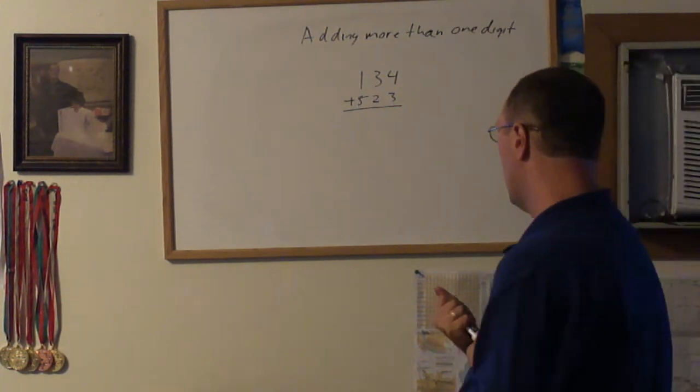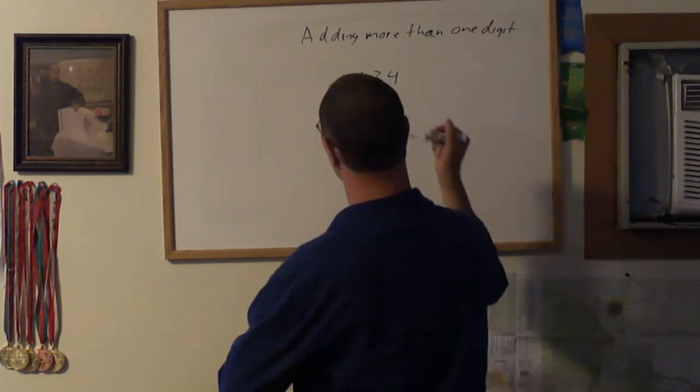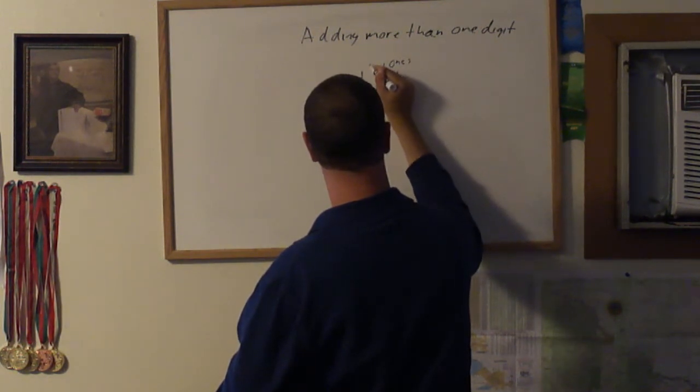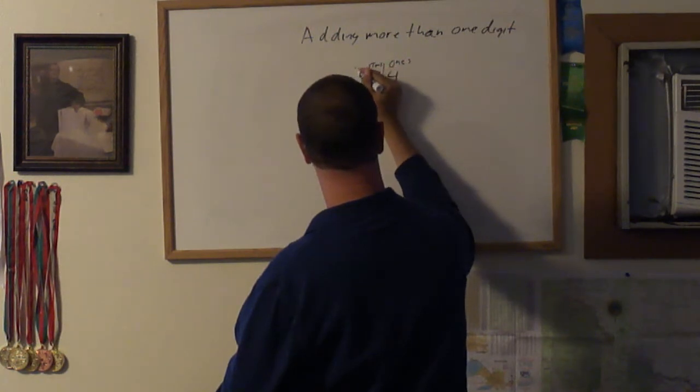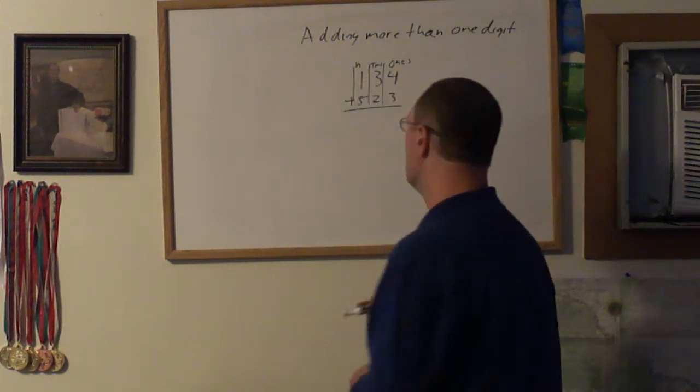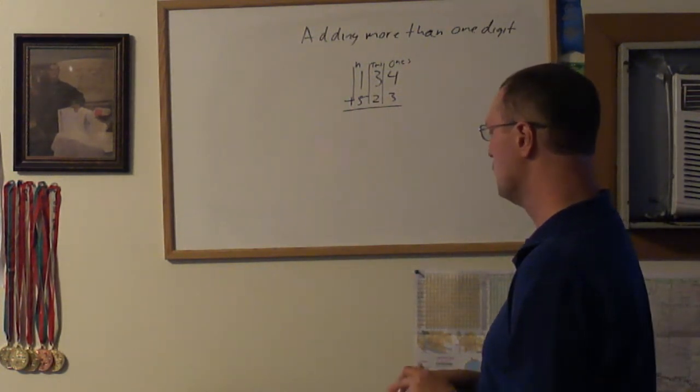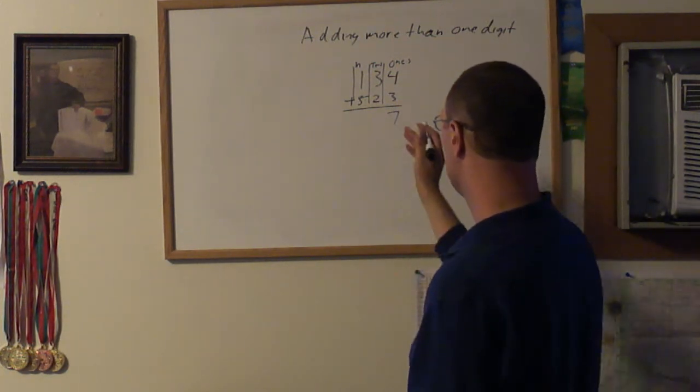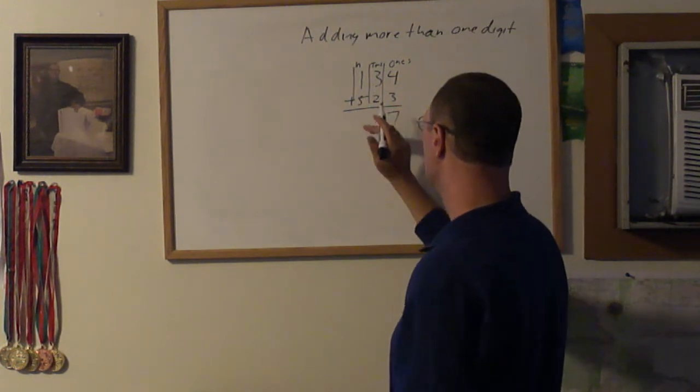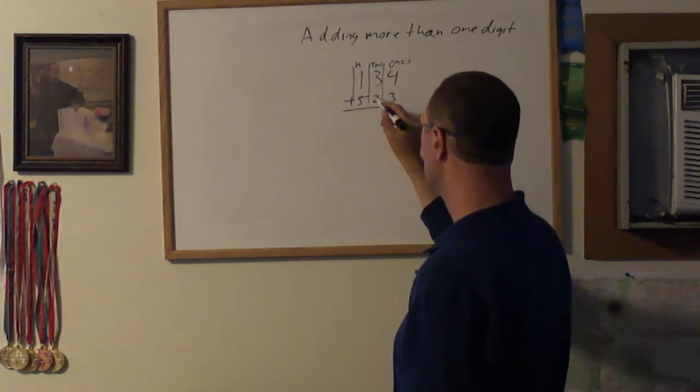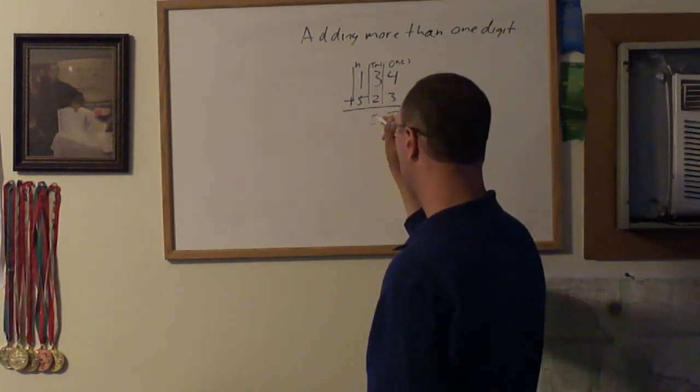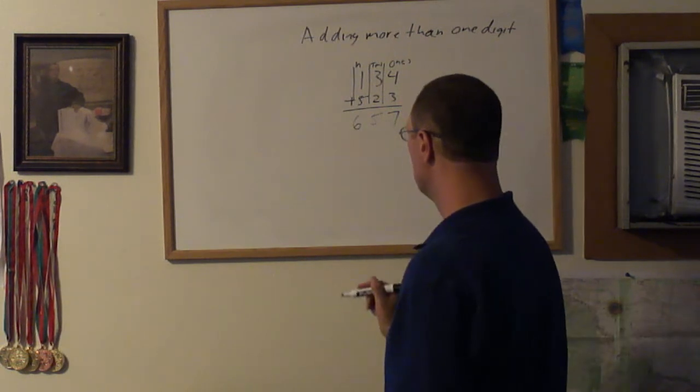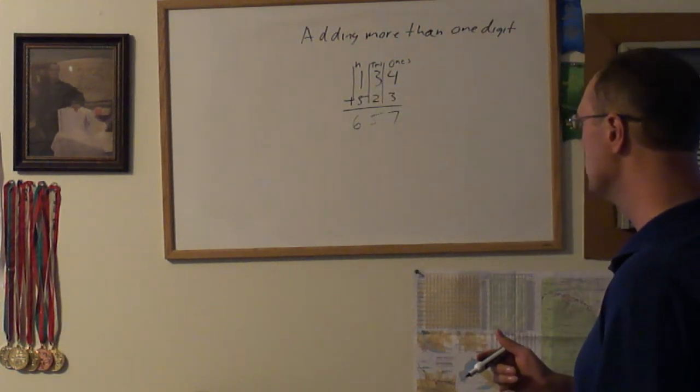This is how I do it. I go to the ones place, then the tens, then the hundreds. Let's start with the ones place: 4 plus 3 is equal to 7. Then the tens: 3 plus 2 equals 5. And then the hundreds: 1 plus 5 equals 6. Now I have the answer 657.